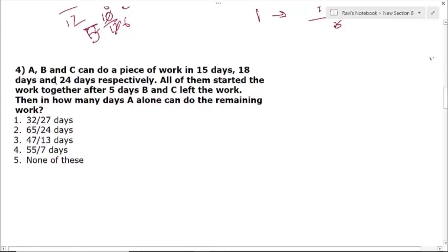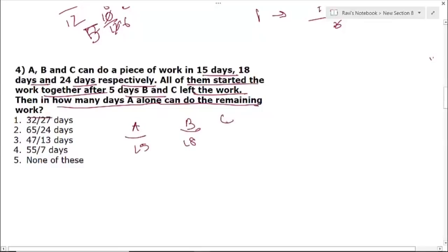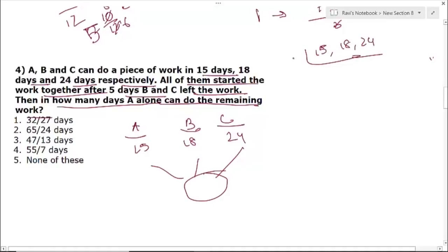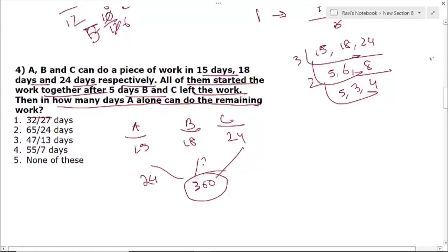Question 4: A, B, C can do a piece of work in 15, 18, and 24 days respectively. All of them started the work together. After 5 days B and C left the work. In how many days can A alone do the remaining work? LCM of 15, 18, 24 = 360. Efficiency of A = 360÷15 = 24, B = 360÷18 = 20, C = 360÷24 = 15.